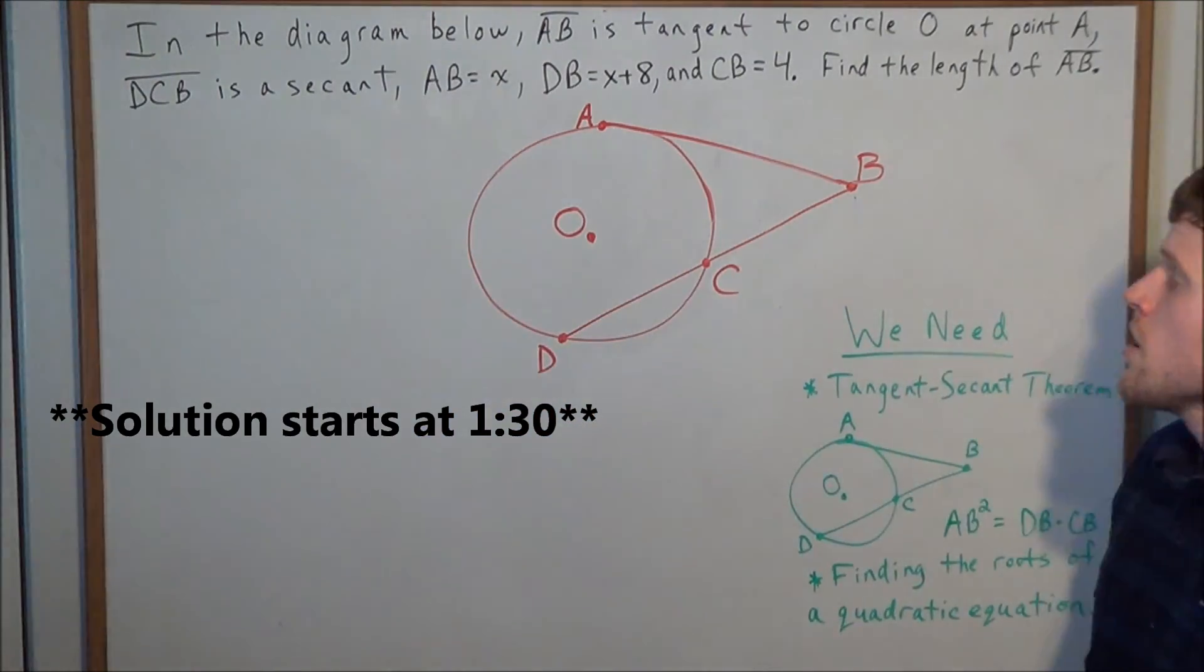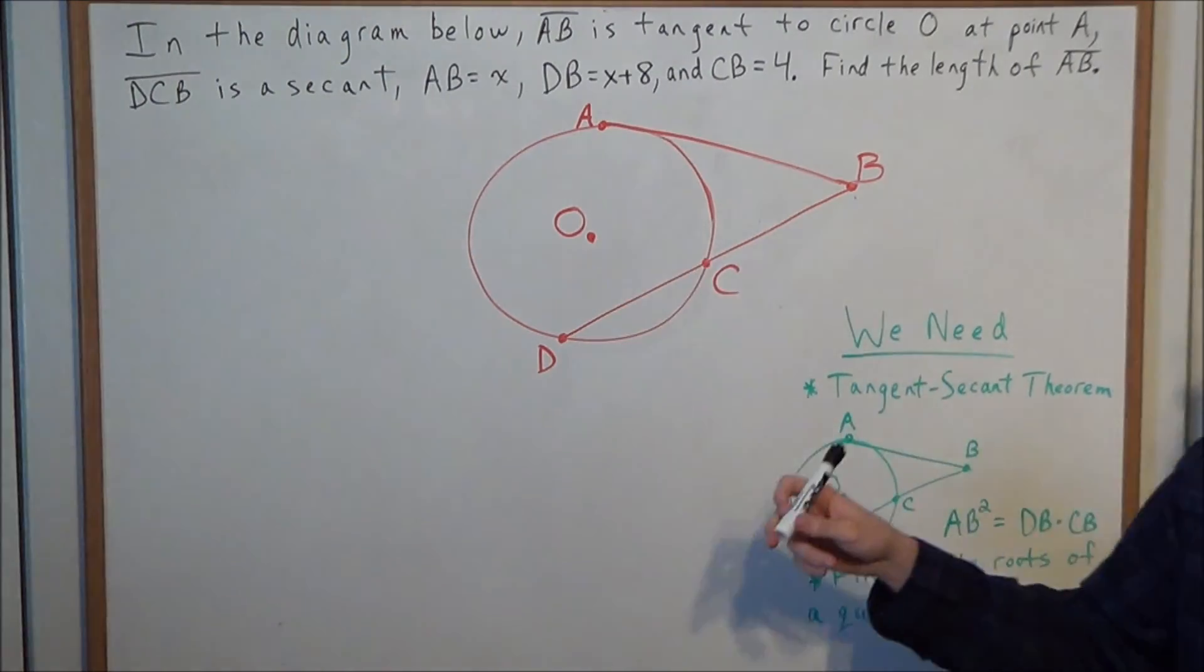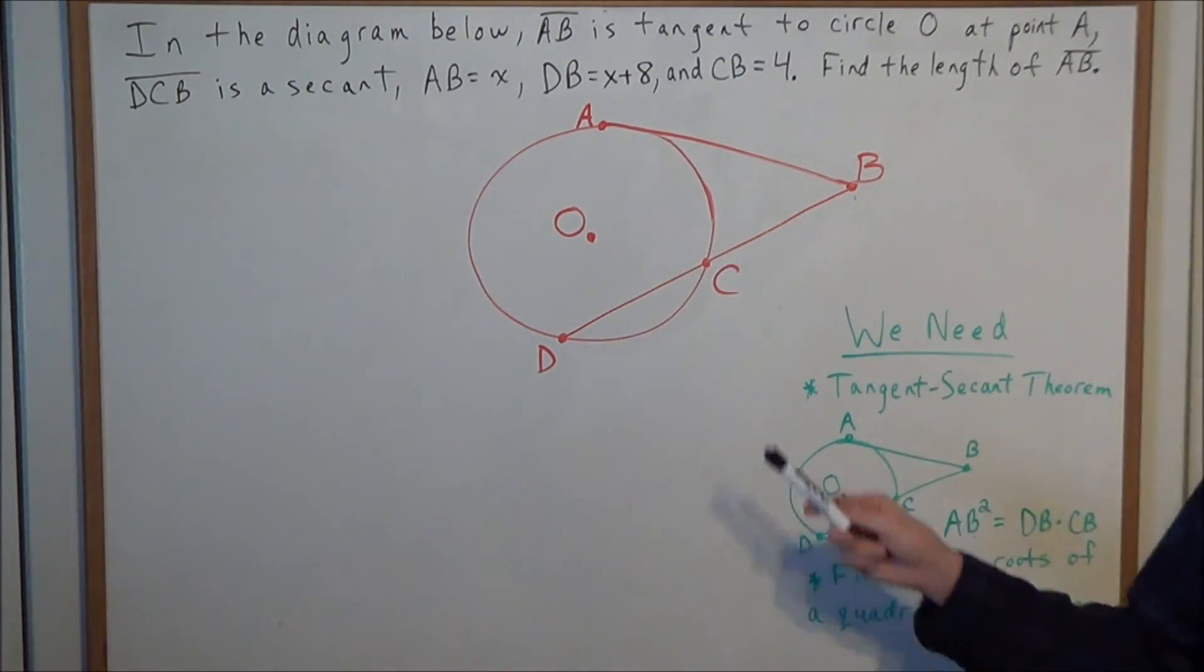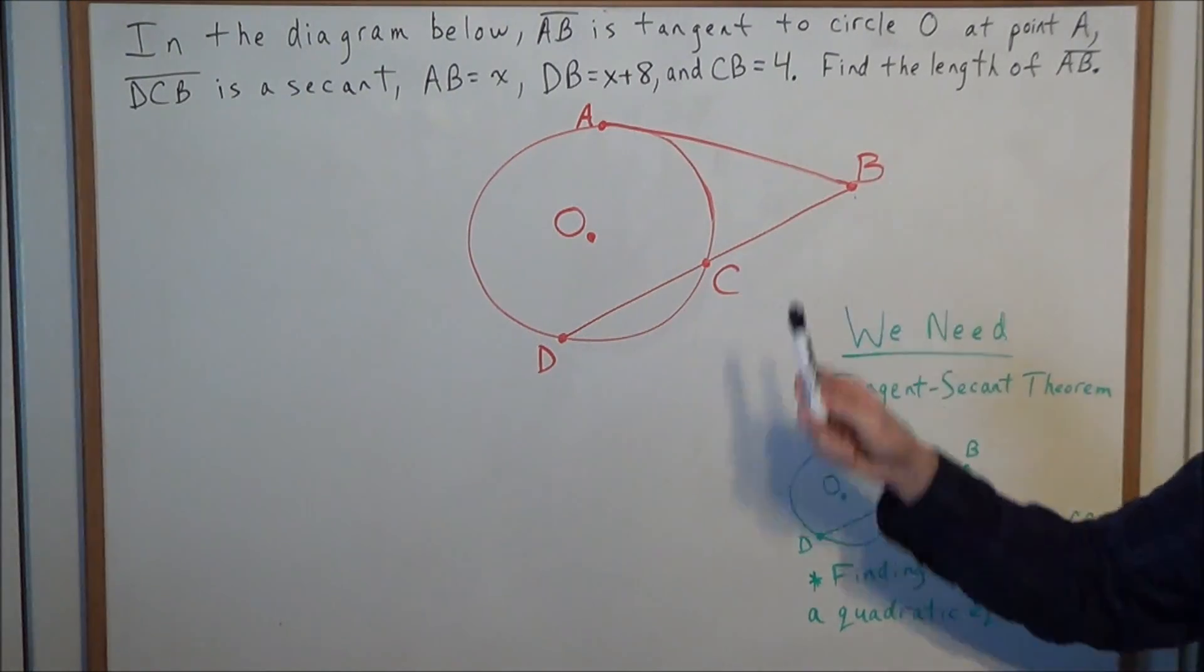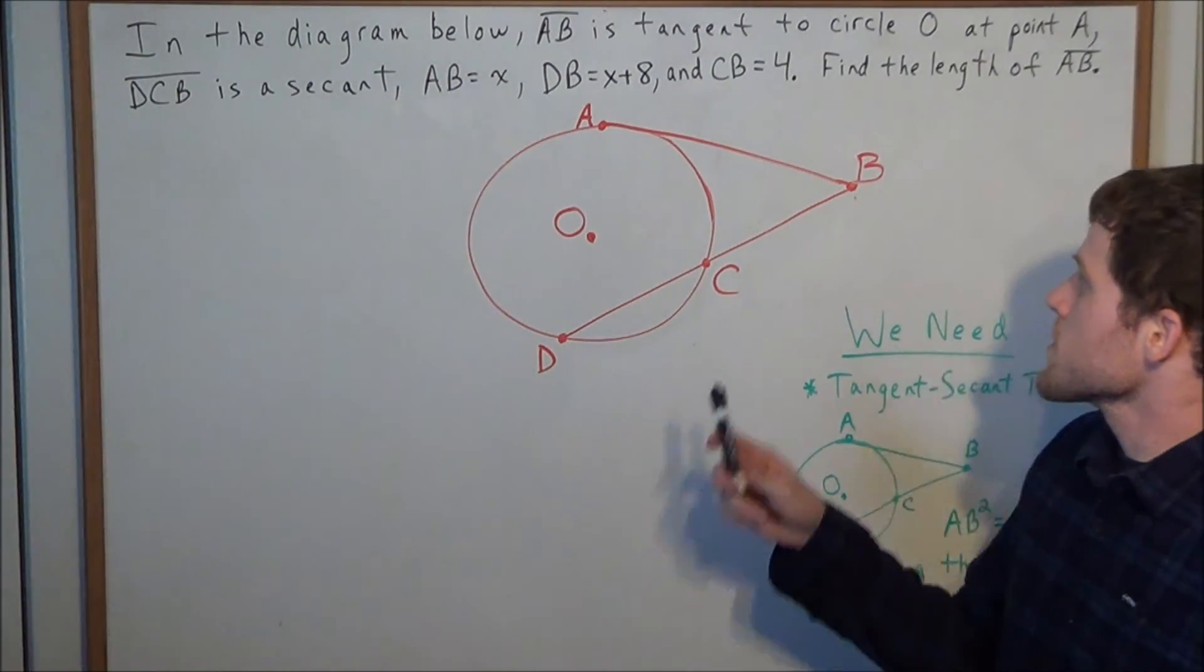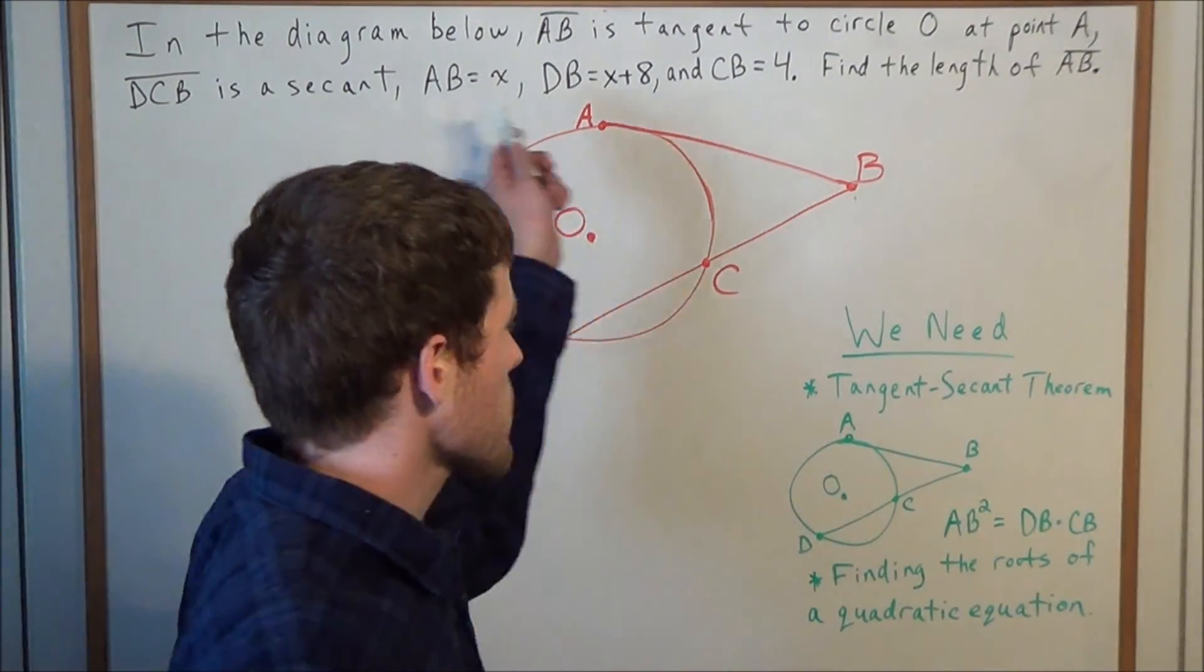We have in the diagram below, line segment AB is tangent to circle O at point A, line segment DCB is a secant, and we have the measure of line segment AB is equal to X, the measure of line segment DB is equal to X plus 8, and the measure of line segment CB is equal to 4, and we need to find the length of line segment AB.